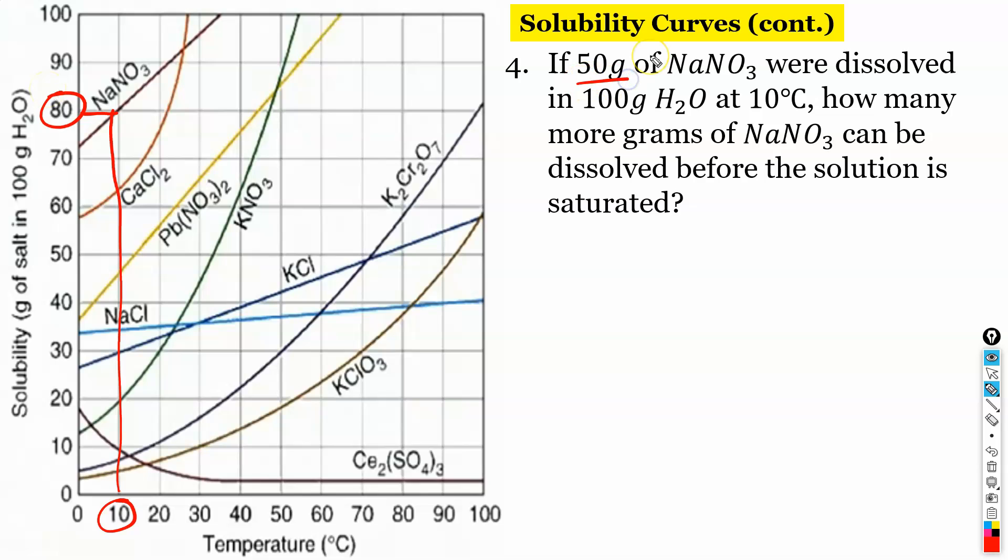And we've already put 50 in. So we have 80 grams NaNO3 at 10 degrees Celsius. That's saturated. We have 50 in it already.